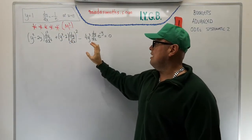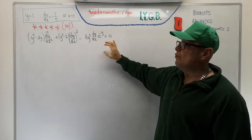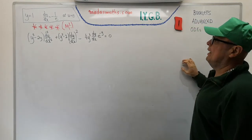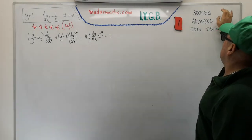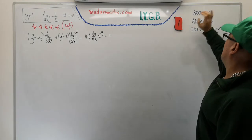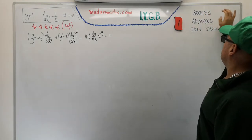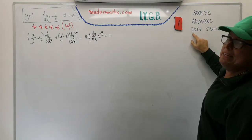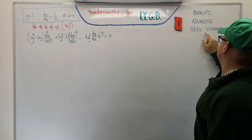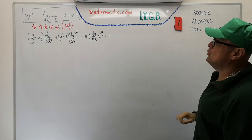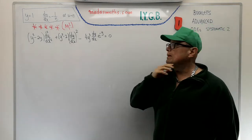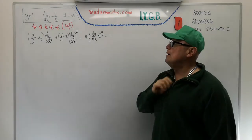If you want to definitely find this one — full solution of course — to follow at your own pace, you can actually look for it in my website under booklets, advanced, and the PDF is called ODE Systematic 2. Somewhere towards the end of the booklet you will find this particular differential equation.